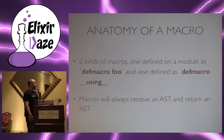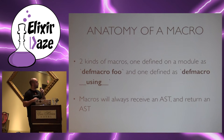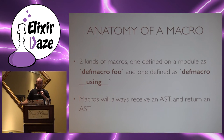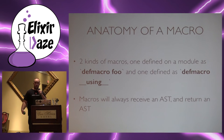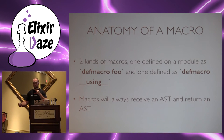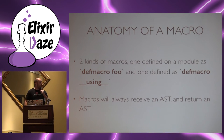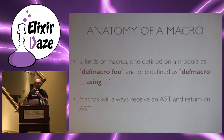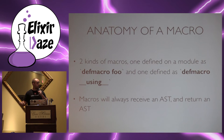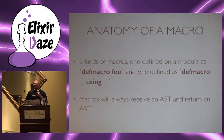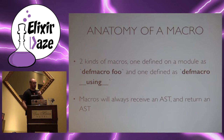Let's look at a macro. The anatomy of a macro: they always receive an AST and always return an AST. You have two types: you can define a regular macro with defmacro, or you have a special using macro where you can define functions and more macros. Everything inside the using macro will be evaluated in the context of the calling module — we'll see an example of that later.